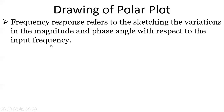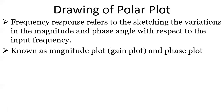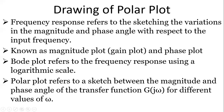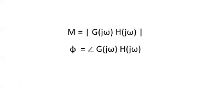With respect to the input frequency, if we understand how the magnitude and phase angle are varying, that's what we normally call frequency response — giving us a magnitude plot and a phase plot. A Bode plot refers to the frequency response using a logarithmic scale, whereas a polar plot refers to a drawing between magnitude and phase angle of the transfer function for different values of omega. This is done on a simple scale, not a logarithmic scale — when we draw it with polar coordinates we call it a polar plot.